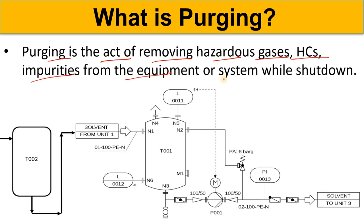Purging is done from the equipment and the system while shut down. First of all, we take the shutdown, and then we start purging the lines and the equipment before handover for maintenance. We do that because we want to remove and eliminate the hazardous gases or hazardous atmosphere.